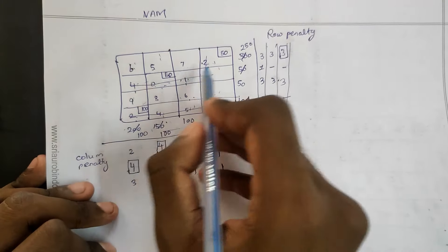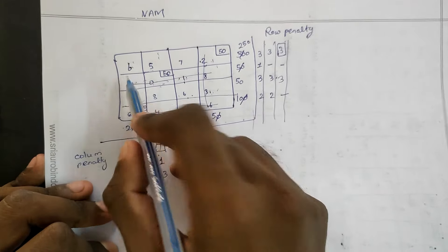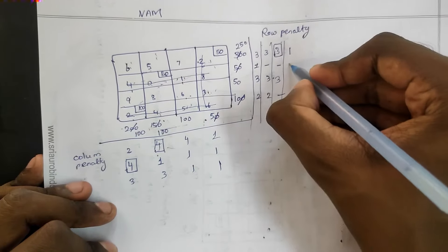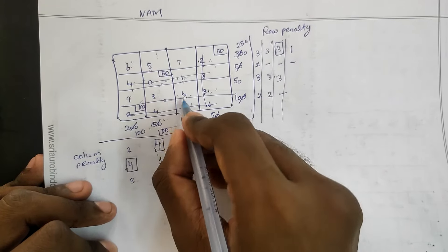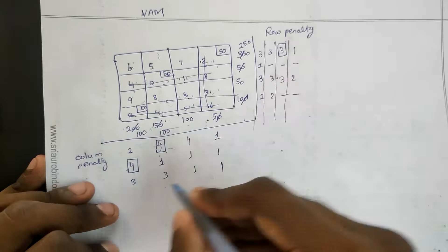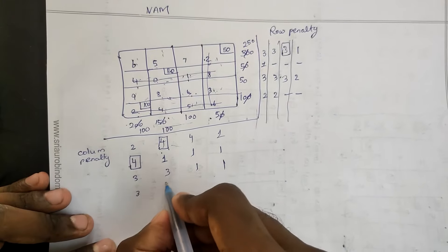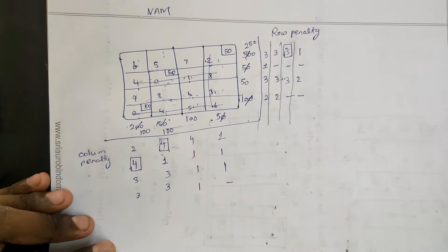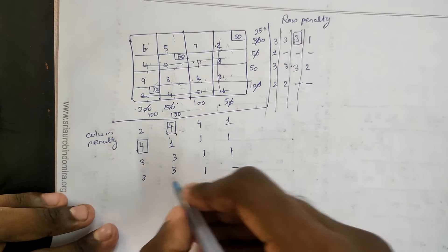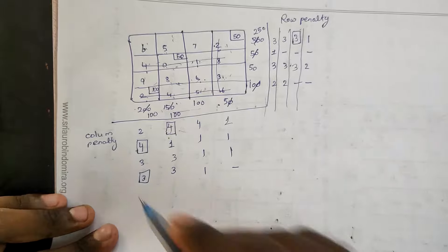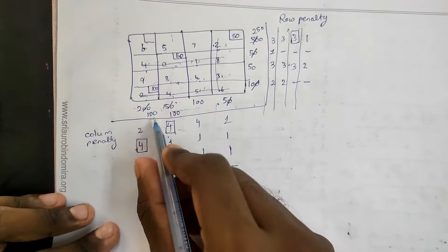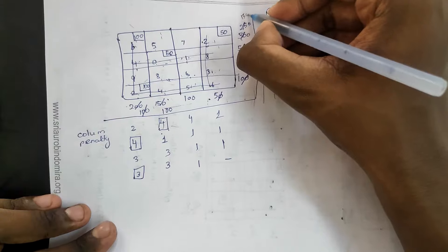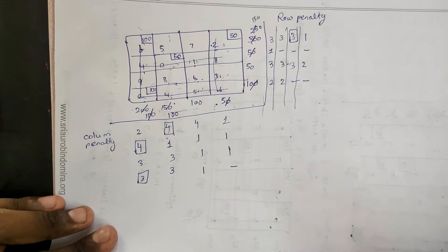4th step. I will add 2, that's why I add 5. 5 minus 6 is 1. This is full. 8 minus 6 gives 8. 2 is full. 9 minus 6 is 3. 7 minus 6 is 1. I will add 2. I will add 3. This is the 6. I will add 100 and 250. This is the 4th step.